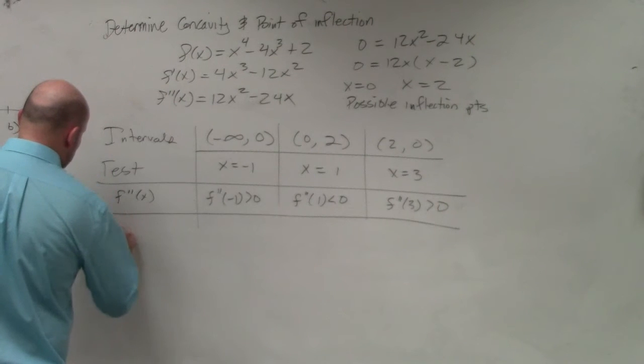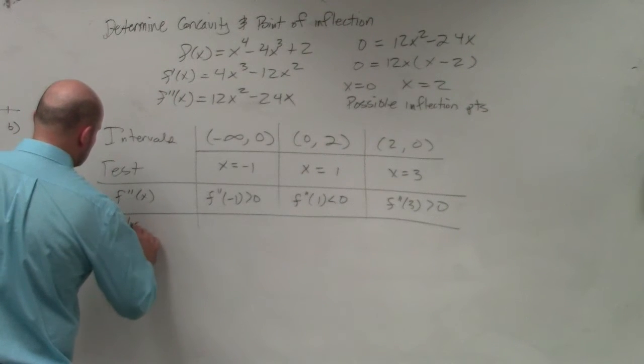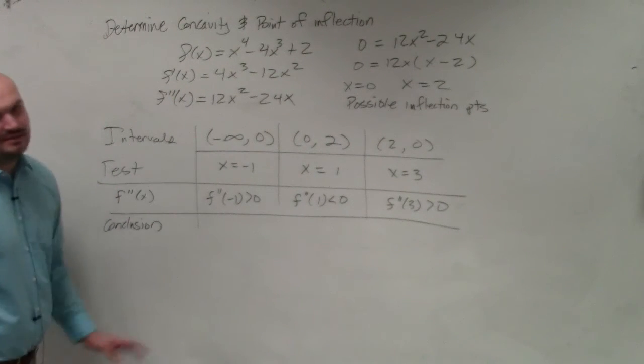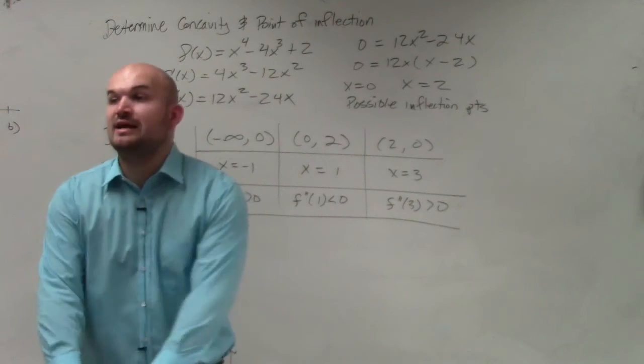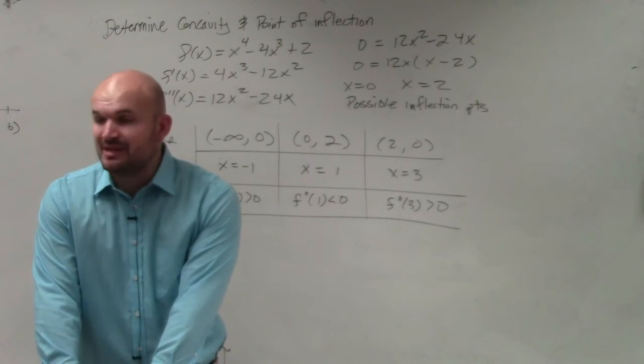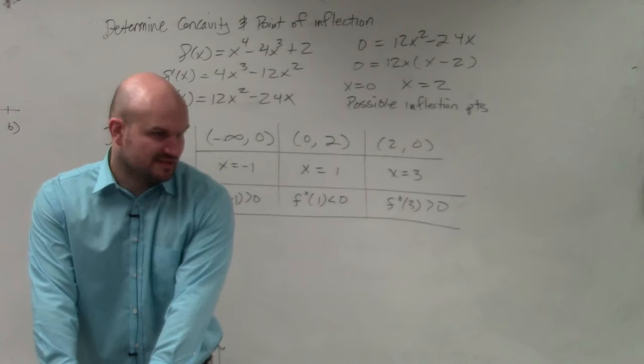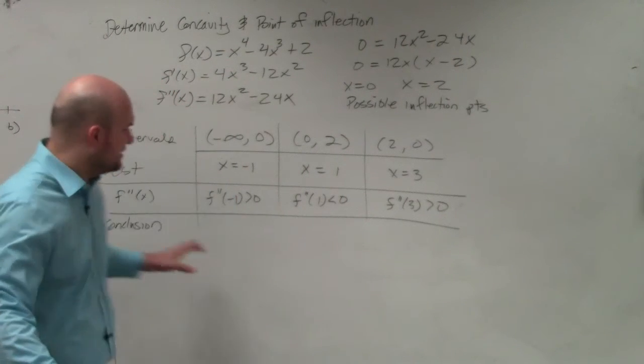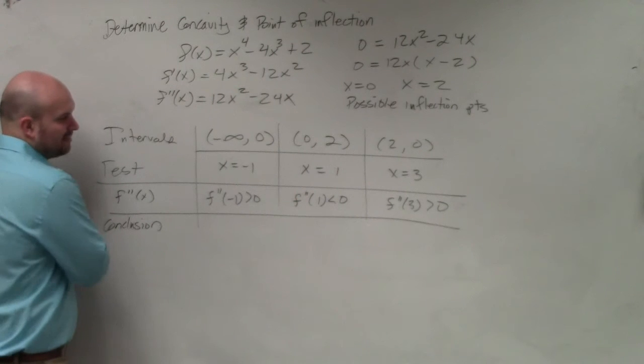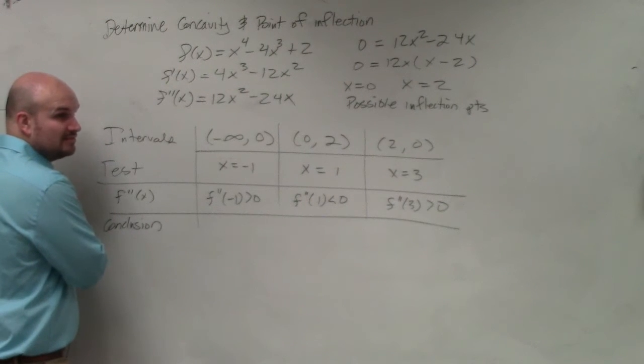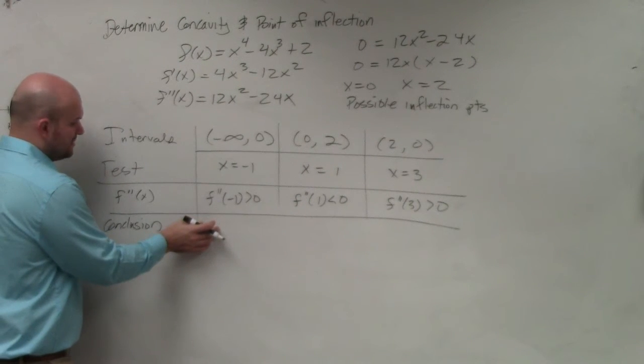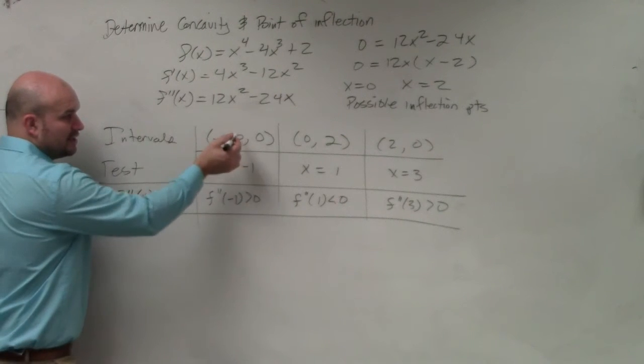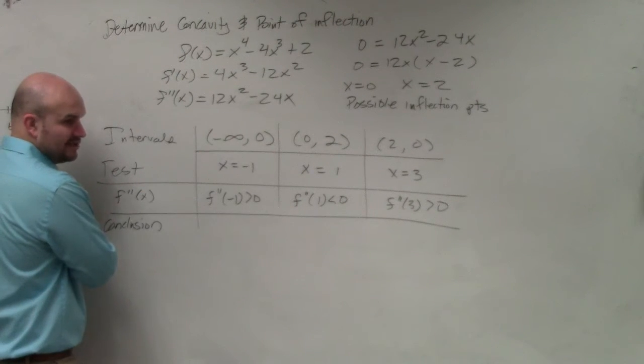So therefore, then we get to our last one is the conclusion. And then, ladies and gentlemen, we get into our writing portion of it, right? So I'm going to say what the writing portion is, but to save us a little bit of time, I'm just going to write if it's concave down or up. But basically, you'd say, since f double prime of negative one is greater than zero, we could say that f of x is concave up on the interval negative infinity to zero.